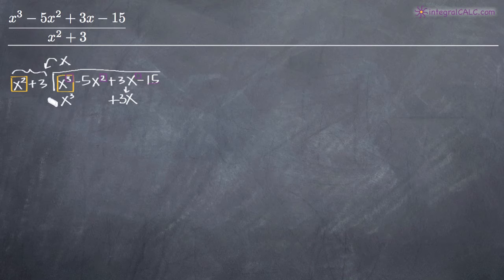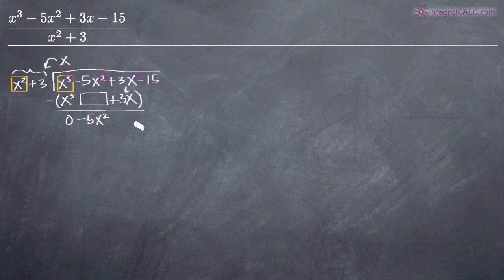So then what we want to do is go ahead and draw parentheses around your result and then put a minus sign out in front because we're going to subtract. So x to the third minus x to the third gives us zero. There's no term here for x squared, so we get basically negative 5x squared minus zero which results in still a negative 5x squared. Then we have 3x minus a positive 3x, which is going to be zero.